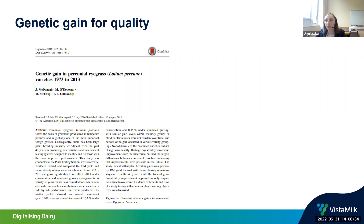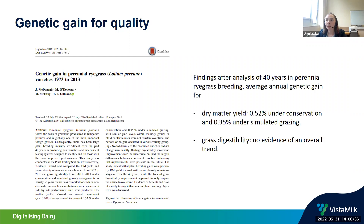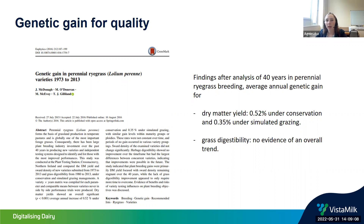In terms of genetic gain for quality, our colleagues at Moorepark performed a study looking at the last 40 years of the perennial ryegrass breeding program. They found an average annual genetic gain for dry matter yield under two different managements, but in terms of grass digestibility there was no evidence of an overall trend. This is because we haven't been really focusing much on digestibility — there wasn't a process in place to check and select for this trait.